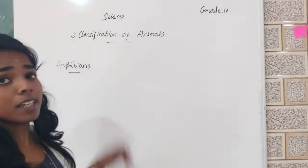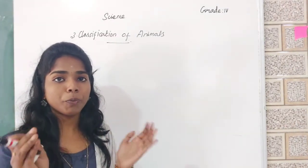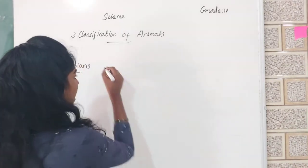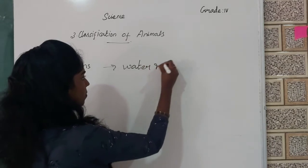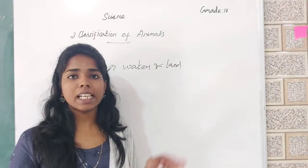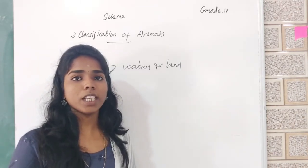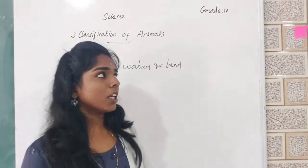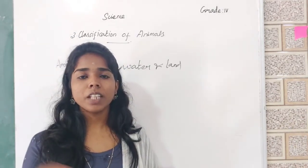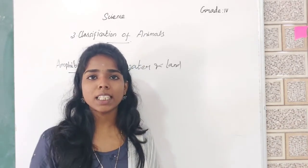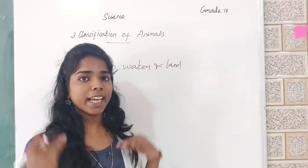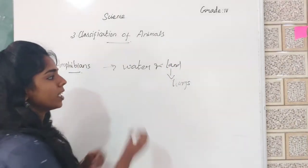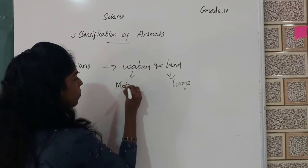What is meant by the term amphibians? Amphibians are the group of animals that can live in water as well as on land. These animals are known as amphibians. Examples include frogs, newts, and salamanders. The amphibians breathe with the help of lungs when they are on land. When they are in water, they breathe with the help of their moist skin.